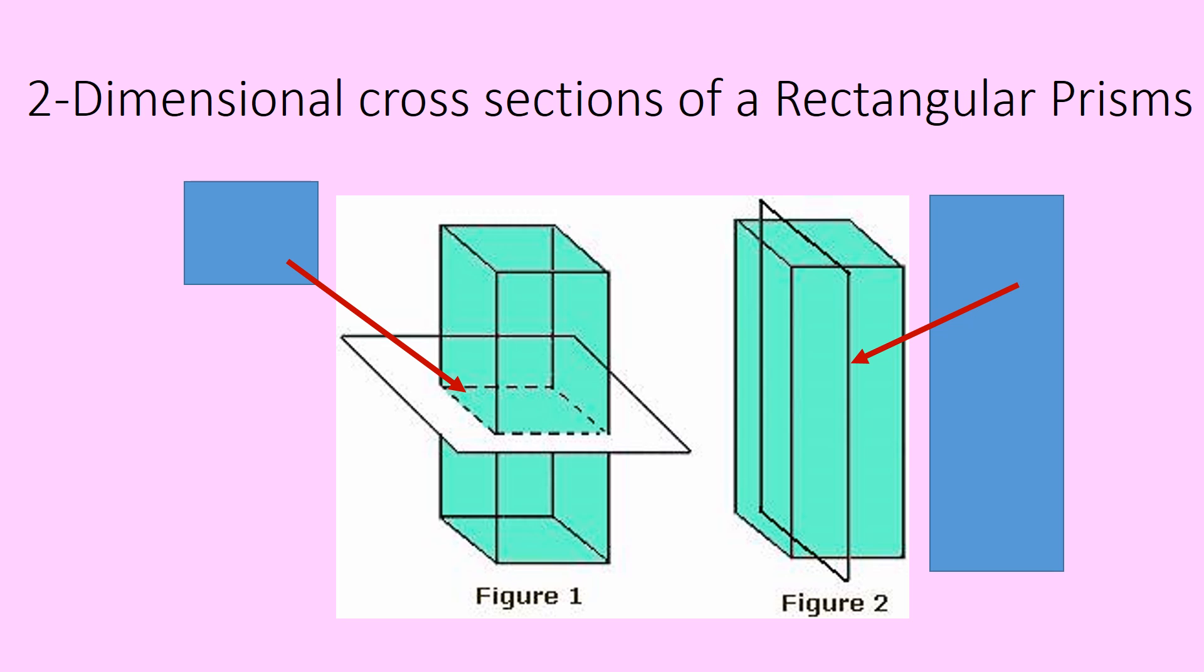Let's look at a prism. This is a rectangular prism. Again, a horizontal cross section gives you the base, and again we have a rectangle. A vertical cross section also gives you a rectangle. This one is pretty easy.